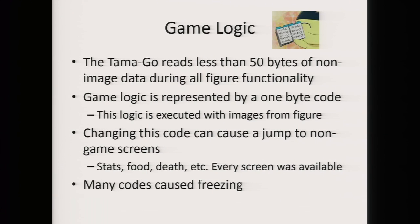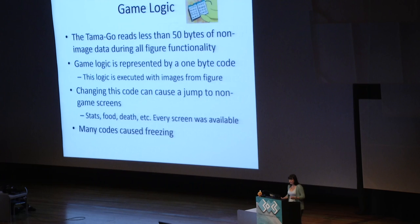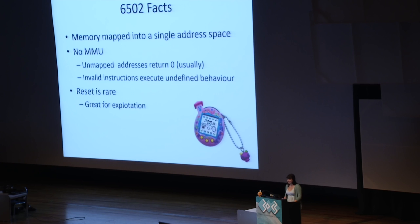Once again, I really just wanted to dump the ROM. So I started thinking again about the game logic — it was represented by a one-byte code that would sometimes jump to a different state and sometimes cause freezing. I didn't know quite what to make of this, but I thought it was possible that this could be exploitable. So I started looking into how 6502 worked and found out some very interesting things. For one thing, 6502 is mapped into a single address space.